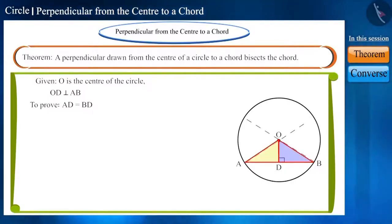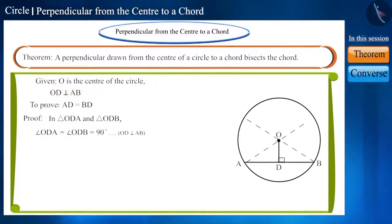And if we prove these two triangles are congruent, then we will get these sides as equal. Friends, in triangle ODA and triangle ODB, angle ODA and angle ODB are right angles because we are given that OD is perpendicular to AB. And the hypotenuse OA and OB of these two triangles are the radii of this circle, so they will also be equal.